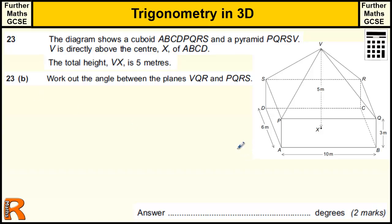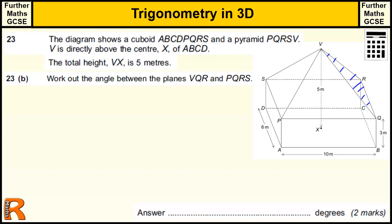Now part B: work out the angle between the planes VQR and PQRS. So VQR is this triangle on the side, and PQRS is that rectangle. What we need to do — and it's quite difficult to visualise — is draw a vertical line going down, and then draw a straight line across to that plane, because that plane touches this rectangle. So we have a triangle whose side goes down the middle of that plane. That's the tricky part to spot.